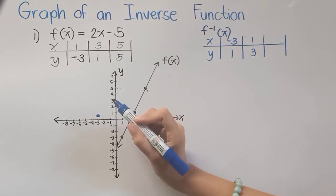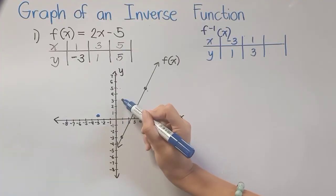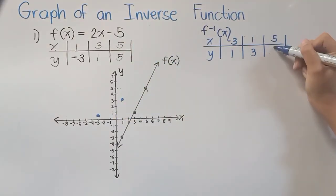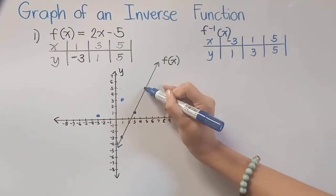Next is 1, 3. So that is in this point. And lastly, we have 5, 5. So we have here this point.